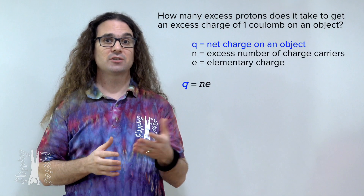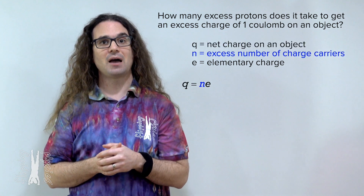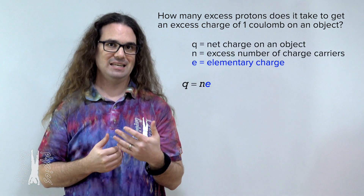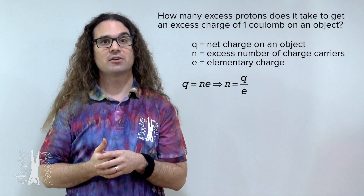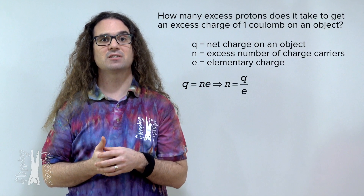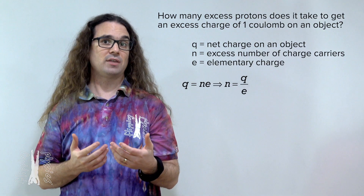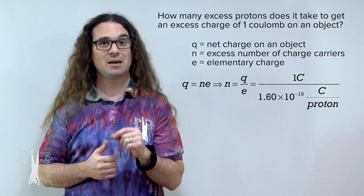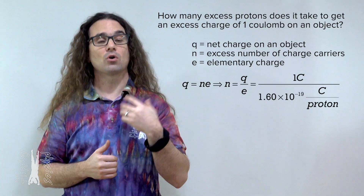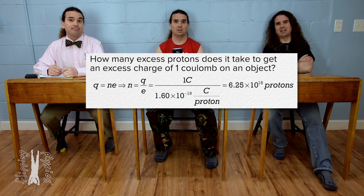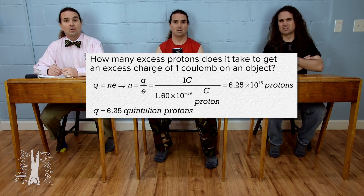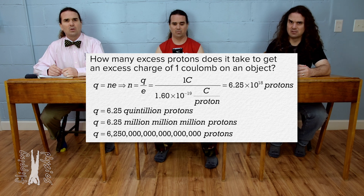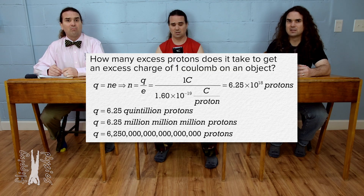The net charge on an object, q, equals the excess number of charge carriers on the object, n, times the elementary charge, e. That means n equals the net charge on the object divided by the elementary charge. For an object with a charge of positive 1 coulomb, that would be positive 1 coulomb divided by 1.60 times 10 to the negative 19 coulombs per proton, giving 6.25 times 10 to the 18th protons — that is 6.25 quintillion, or 6.25 million million million protons.